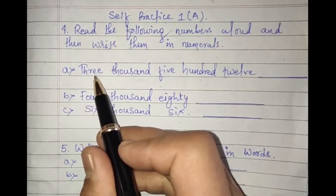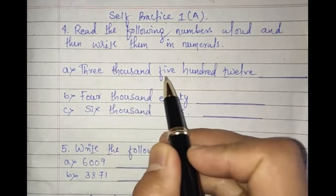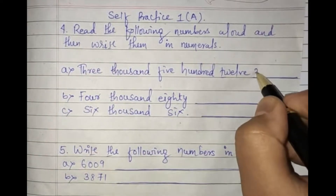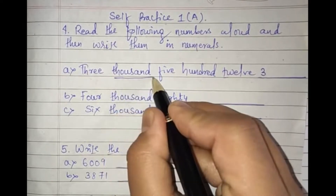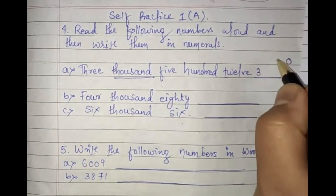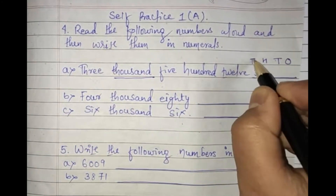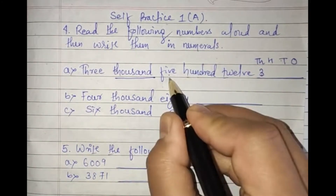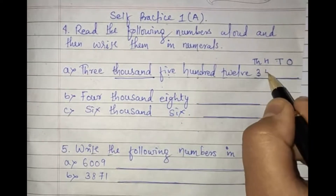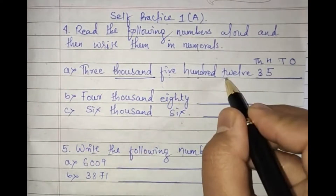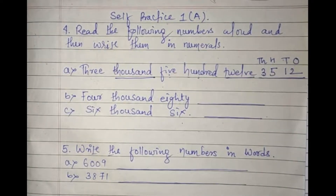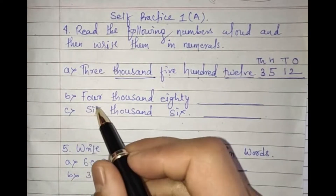The first question is 'three thousand five hundred twelve.' Three is in the thousands position — ones, tens, hundreds, thousands — so three goes in thousands. Five hundred means five is in the hundreds position. The remaining is twelve, so we write 3512. This is the simplest form.